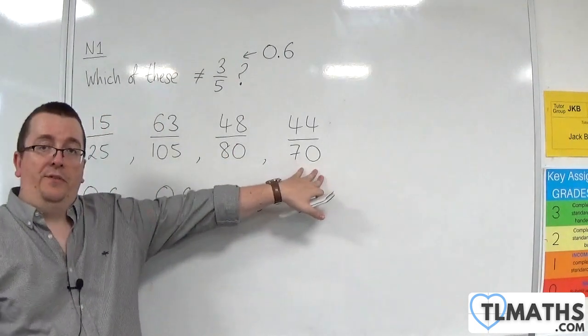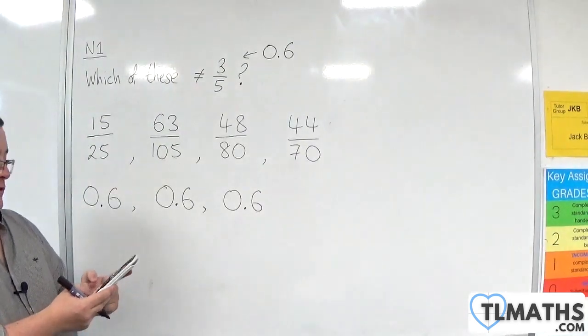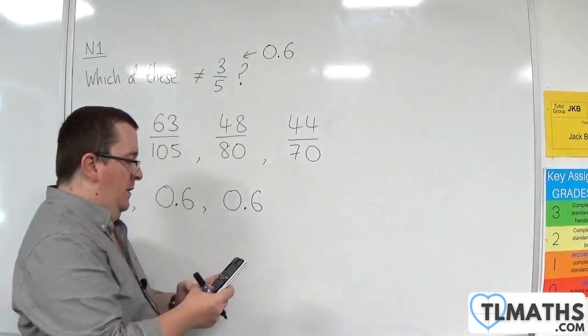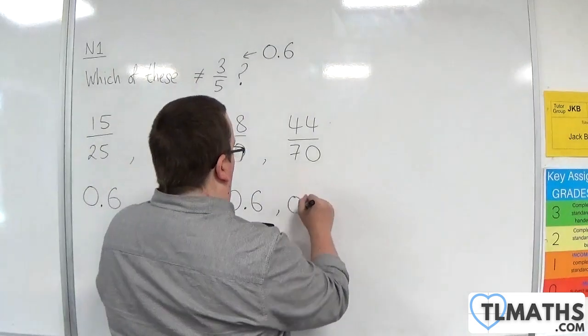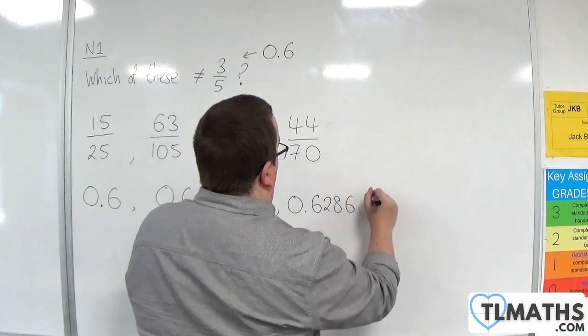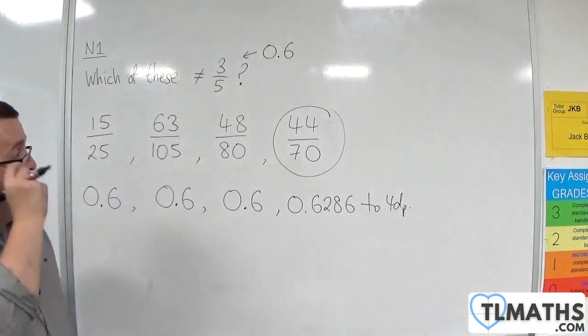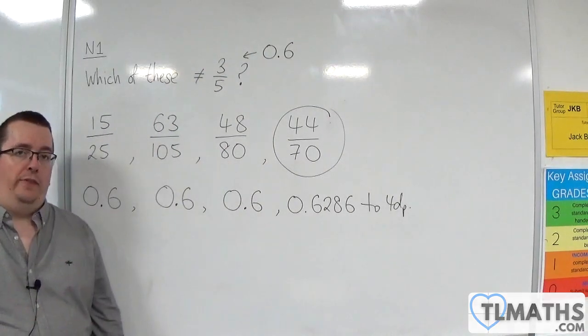So clearly, by process of elimination, it'll have to be this one. So 44 divided by 70 is 0.6286 to four decimal places. So clearly, it is that one that is not equal to three-fifths.